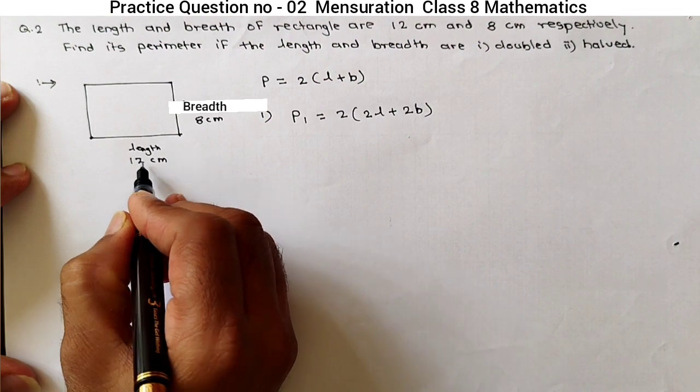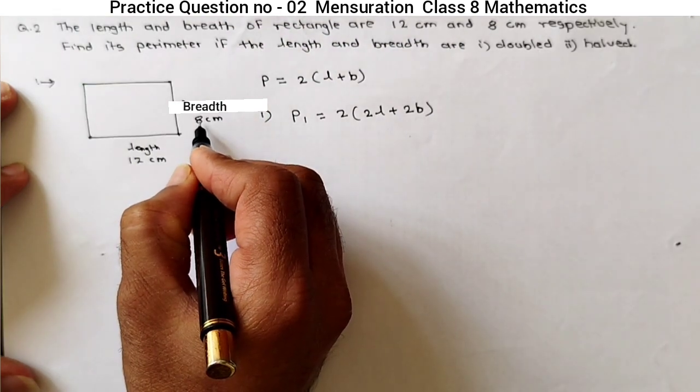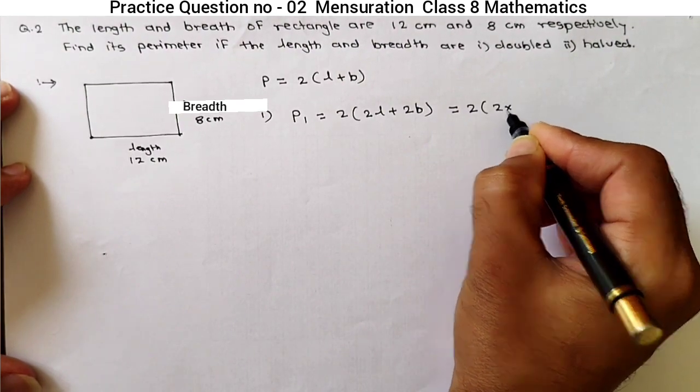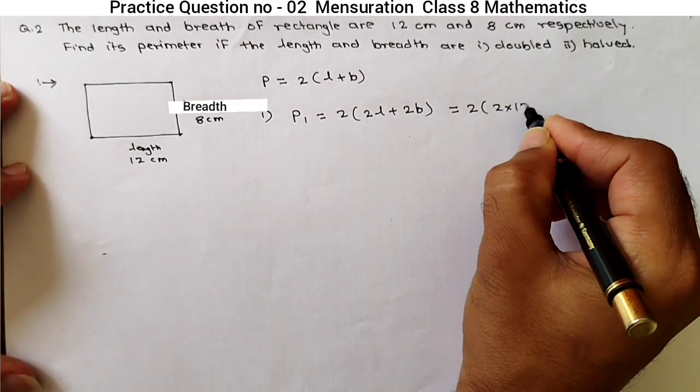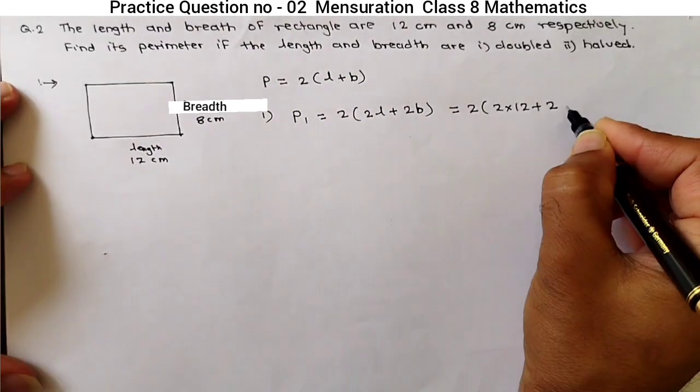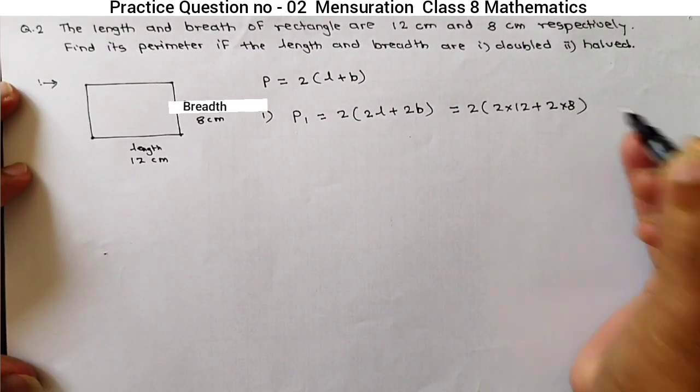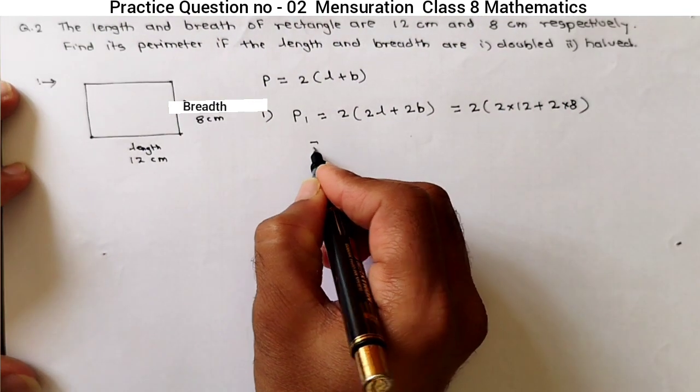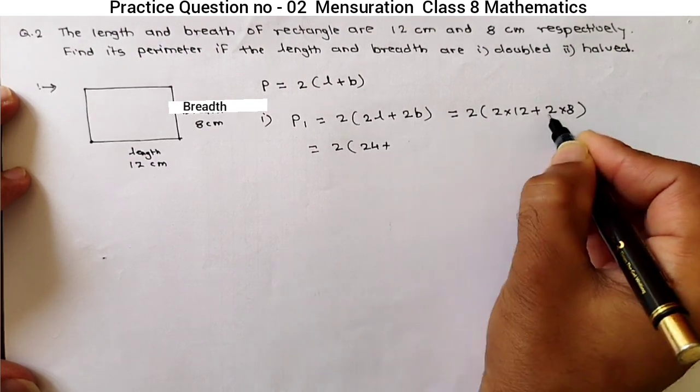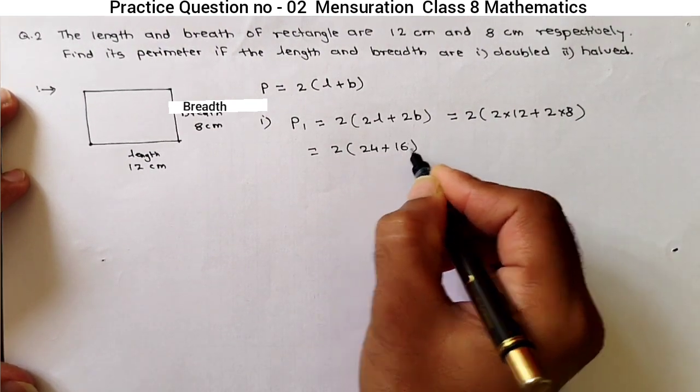What is L? 12 cm. B is 8 cm. Just put the values. 2 into bracket 2 into L is 12 cm plus 2 into B is 8 cm. Just solve the bracket. 2 into bracket 2 into 12 is 24 plus 2 into 8 is 16.